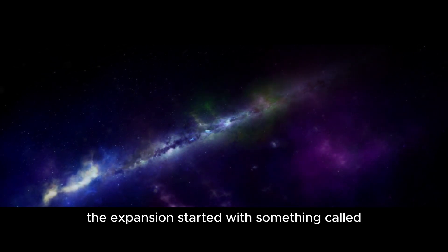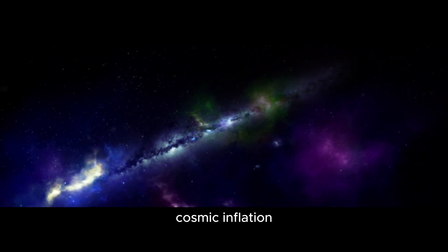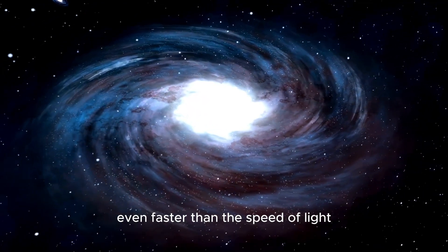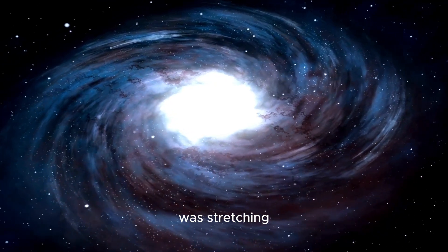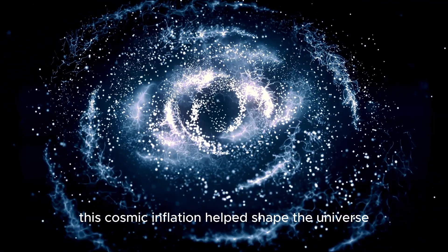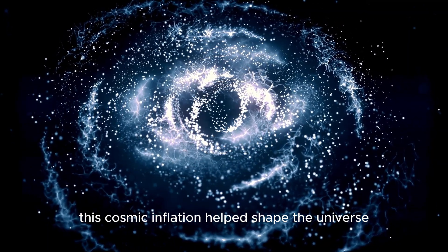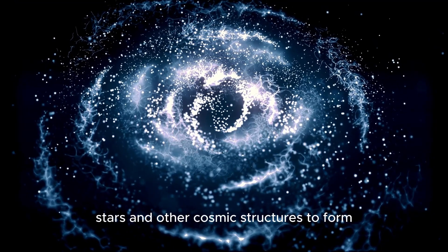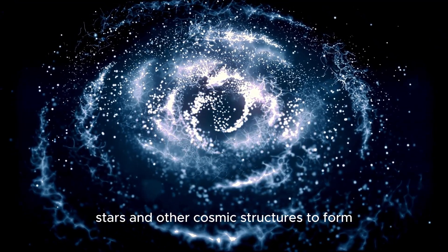The expansion started with something called cosmic inflation, where the universe grew incredibly fast, even faster than the speed of light. It's like the very fabric of space itself was stretching, and everything in it was stretching along with it. This cosmic inflation helped shape the universe by making things more uniform and setting the stage for galaxies, stars, and other cosmic structures to form.